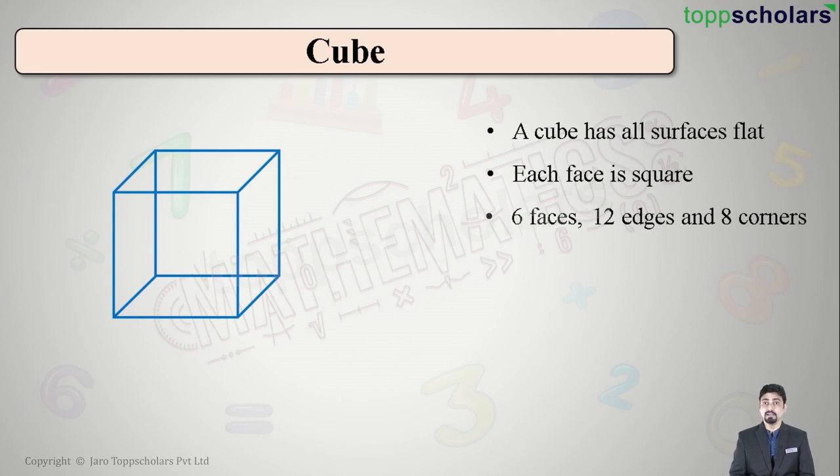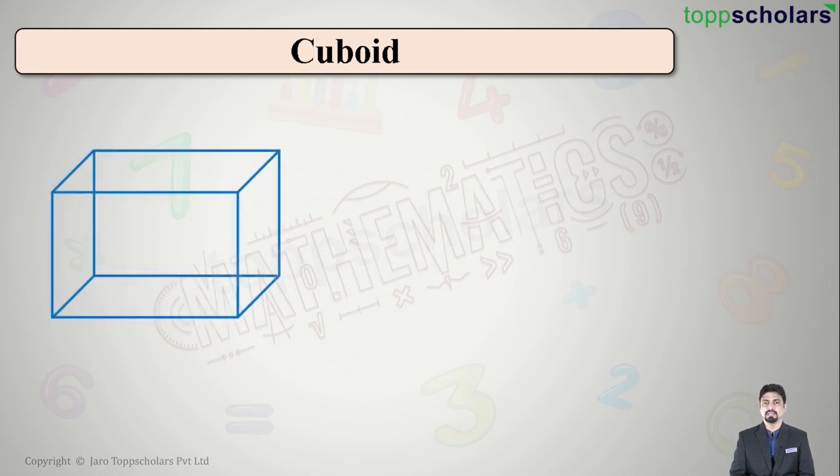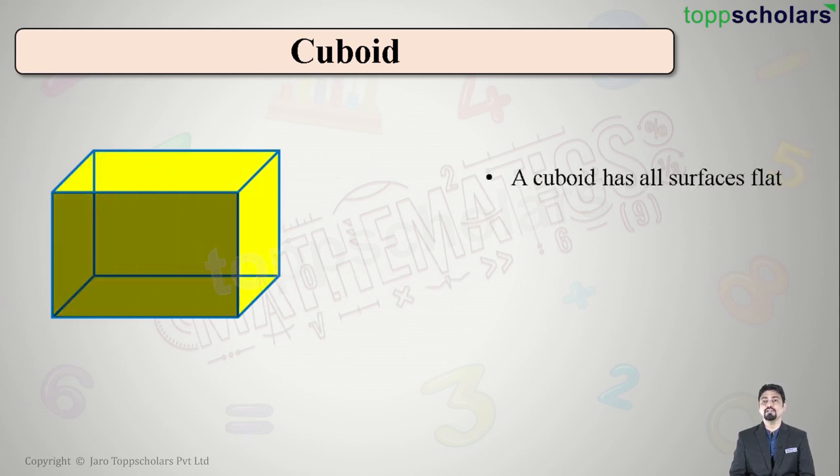Now similarly let us look at cuboid. How does a cuboid look? Like this. Again cuboid also has edges, faces as well as corners. Now a cuboid also has all the surfaces as flat surfaces. How many faces? The four faces besides one behind, one in front. Six faces.